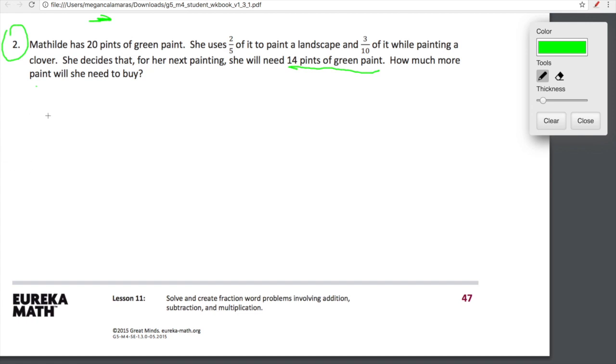Let's organize what we have first. Matildi has 20 pints of green paint. This rectangle represents what we're starting with. She's going to use some of it to paint a landscape, some of it to paint a clover, and then the leftover for her next painting. It looks like we're not going to have 14 pints left over because we're using quite a bit for the landscape and the clover.